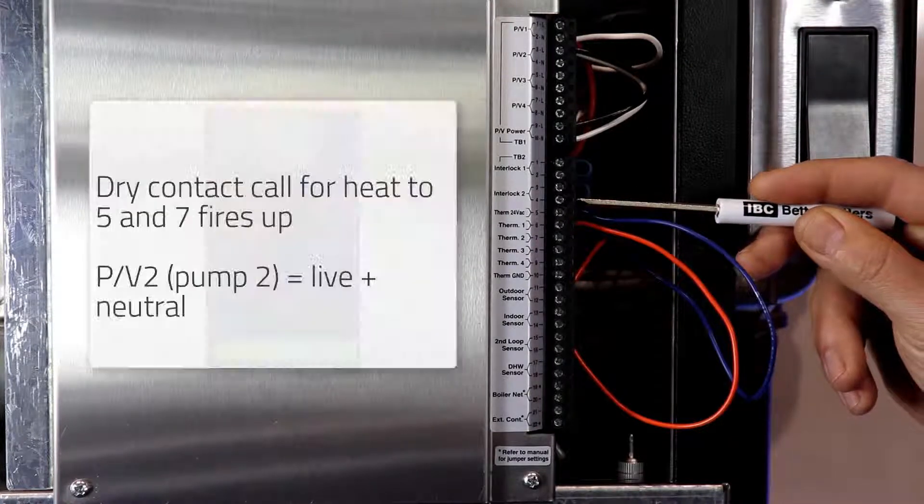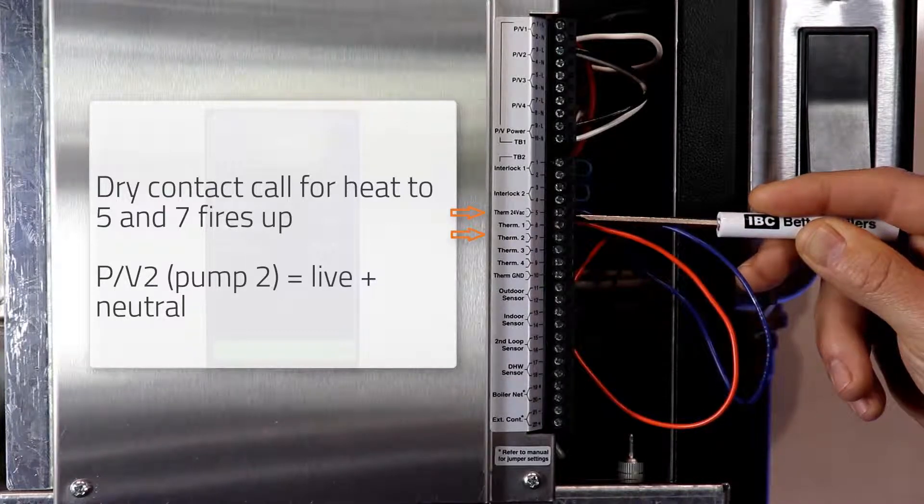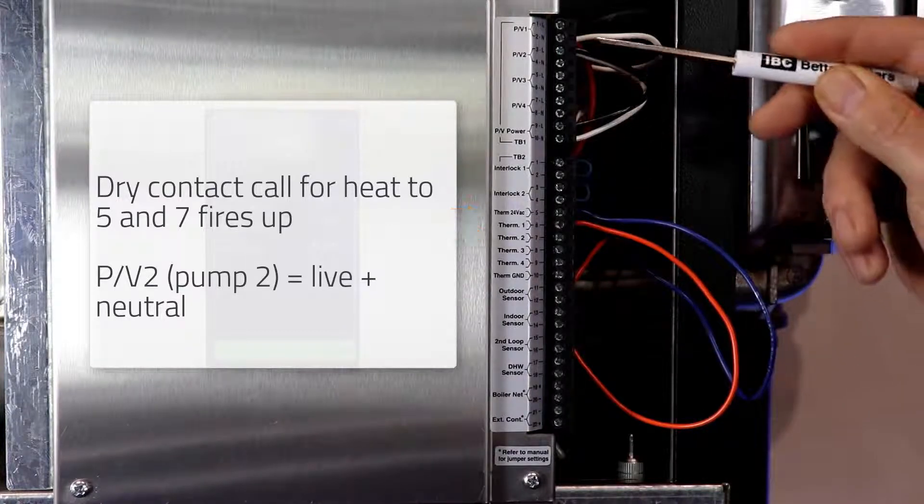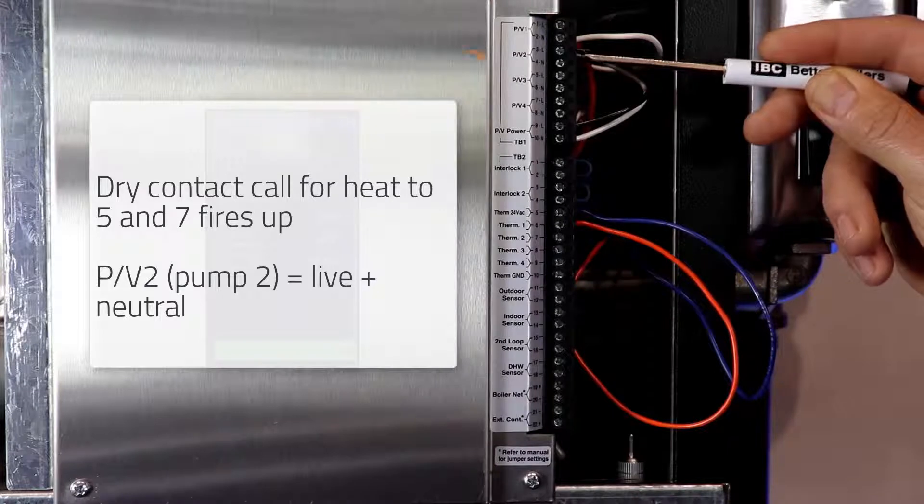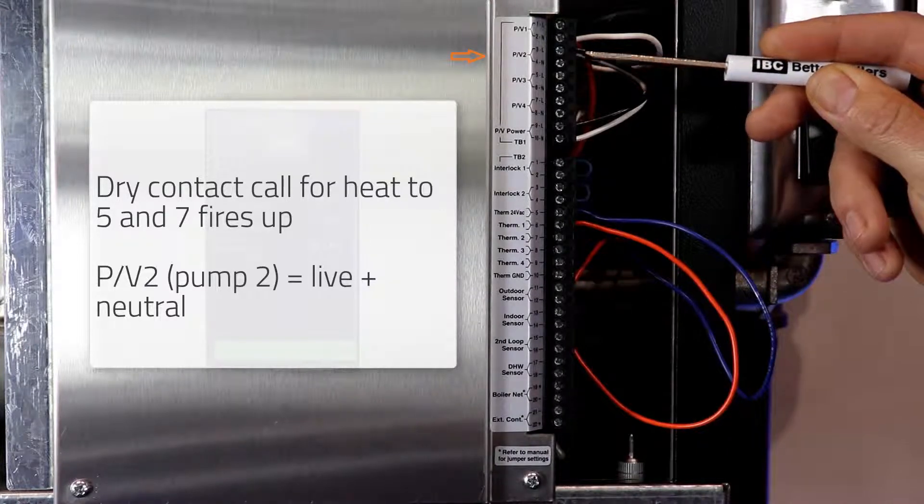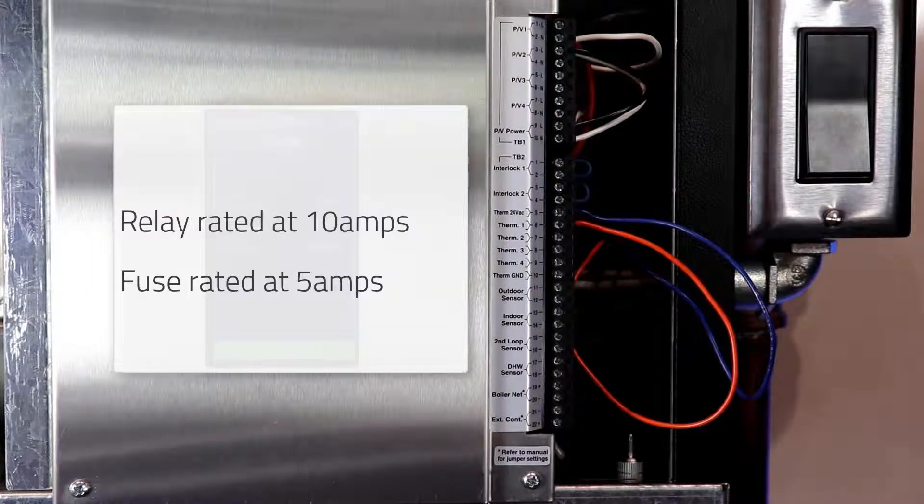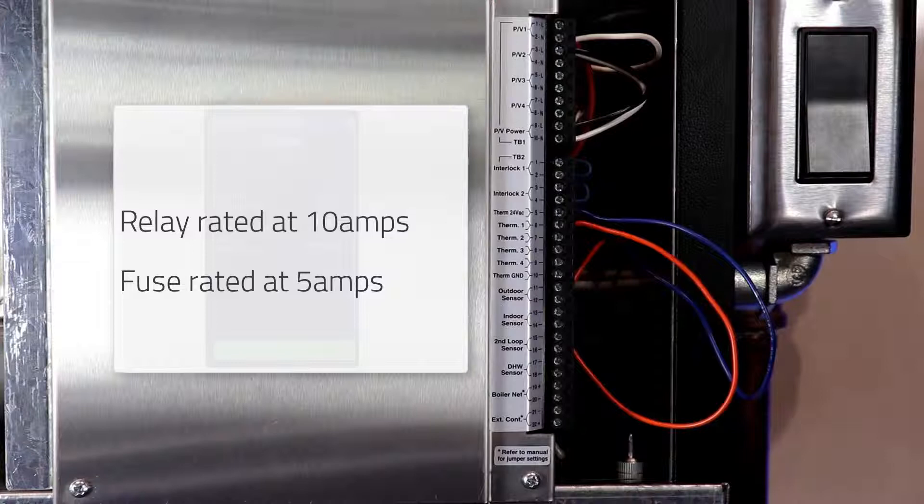Correspondingly, if you wire a dry contact to 5 and 7, when that dry contact closes, it will energize the PV2 relay on the TB1 terminal with a live and a neutral for the pump. The relay on the board is rated at 10 amps and the fuse for that particular pump is rated at 5 amps.